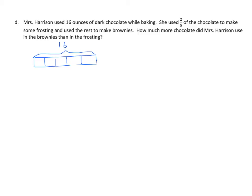We're going to partition this into 5 equal parts. So some were used for frosting, 2 fifths. And the rest were for brownies. How much more chocolate did Mrs. Harrison use in the brownies than the frosting? There's a couple of ways we can go at this. First of all, we're going to start with 5 units equals 16. 1 unit equals 16 divided by 5.